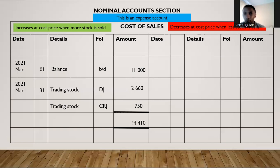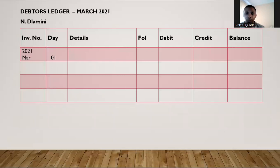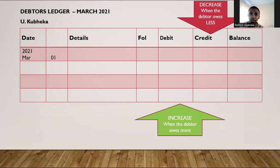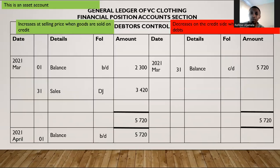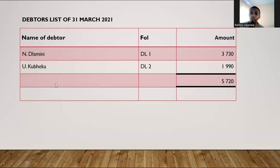The total gives us $14,420. Because this is an expense account, it will not carry a balance. We also prepared our debtors list, which totals $5,720 — made up of what Indra and another debtor owe us. That $5,720 is the balance brought down in your debtors control account, because it represents all the debtors that owe us. The total in the debtors list must always equal the debtors control balance.